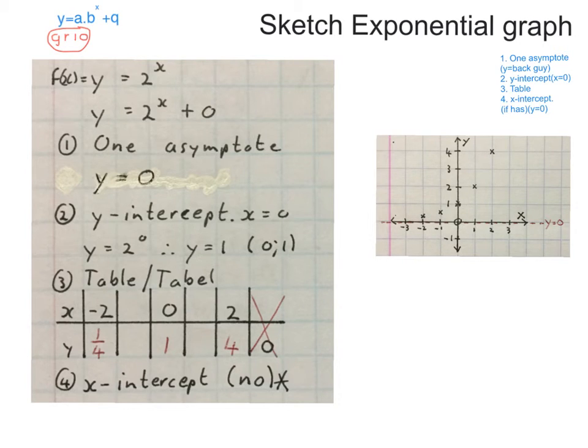It's going to sit over there. So this is what the rough sketch will look like. It will run here. It's not allowed to cross the asymptote.